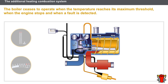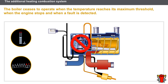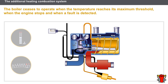The boiler ceases to operate when the temperature reaches its maximum threshold, when the engine stops, and when a malfunction is detected. When the coolant temperature reaches a certain point, the control device receives a signal from the coolant temperature sensor and cuts off the supply to the boiler. When the engine stops, the control device receives a signal from the injection computer and cuts off the supply to the boiler. When a malfunction is detected, the boiler enters fault mode.